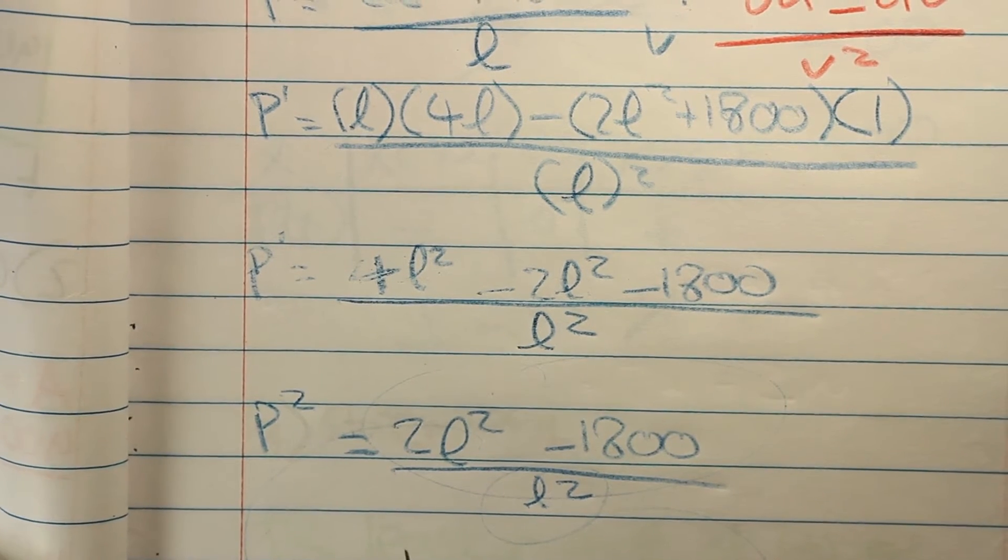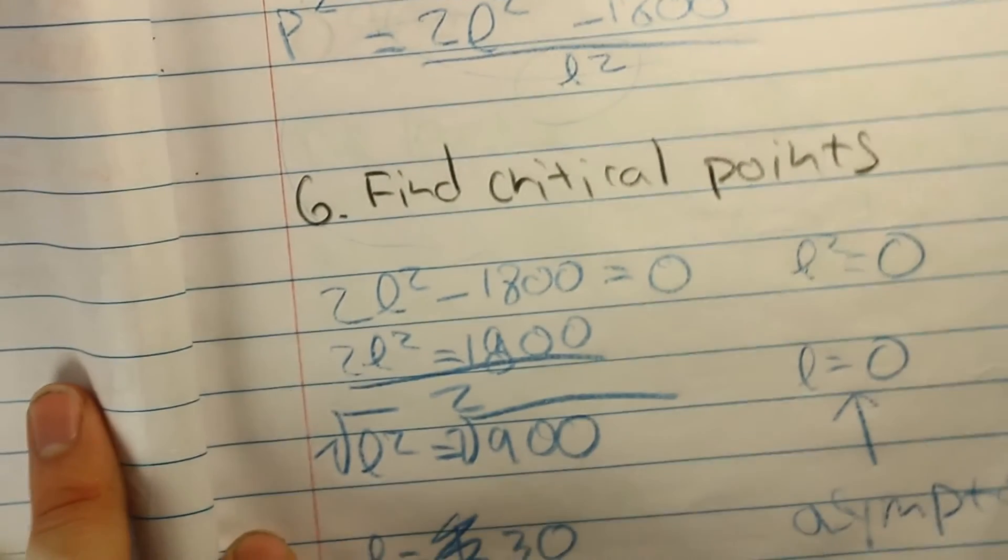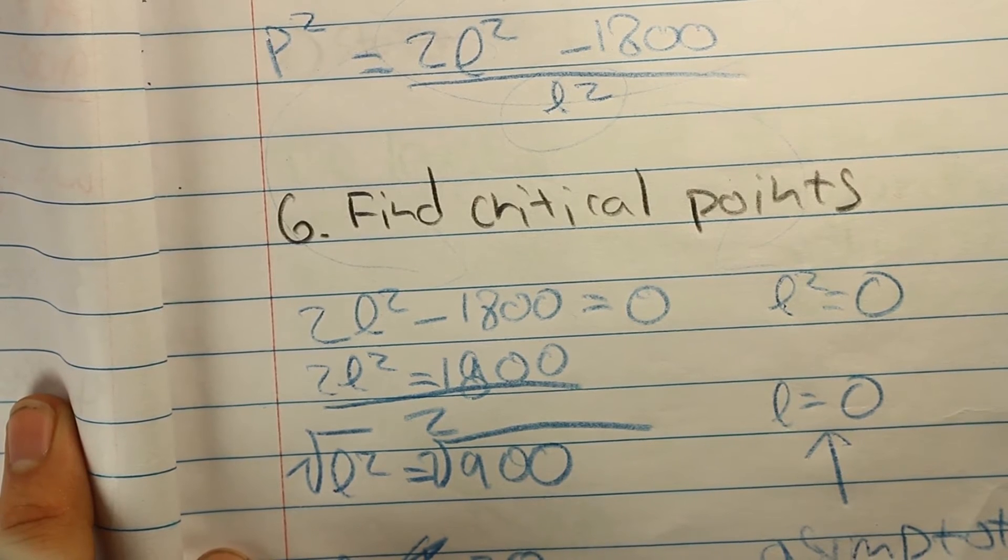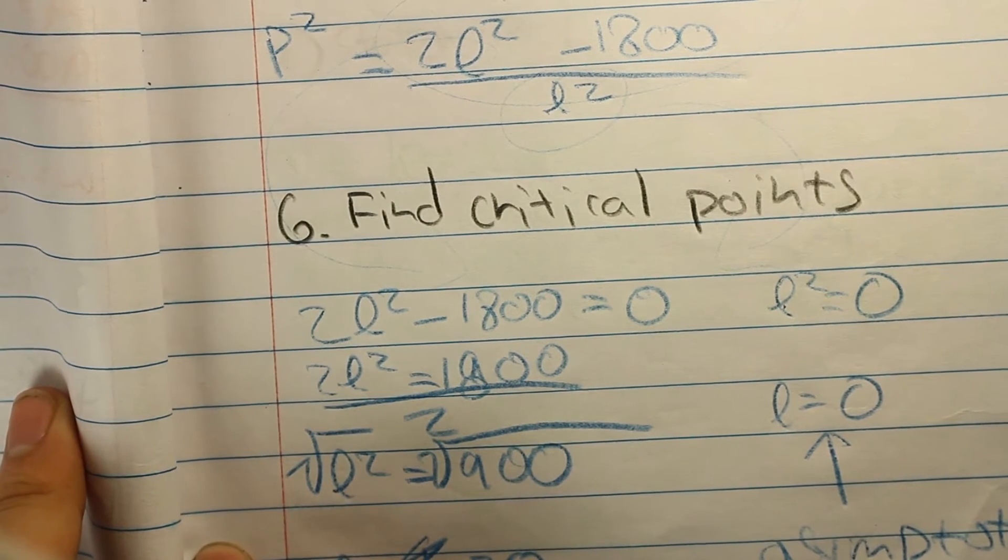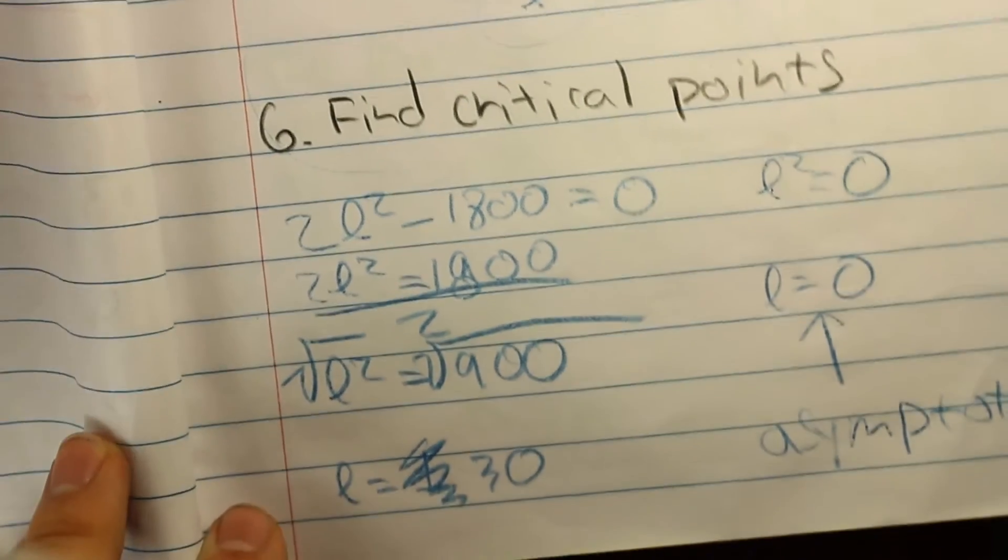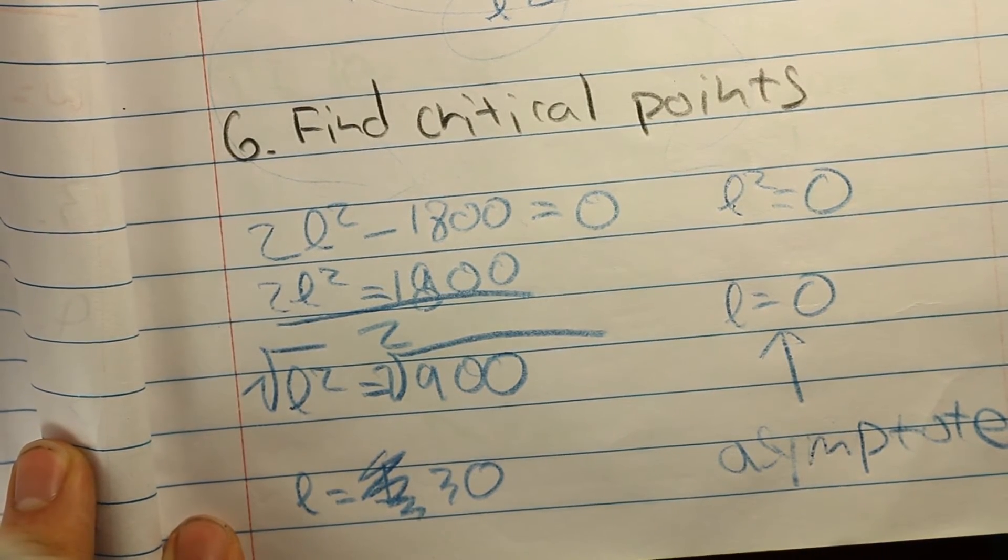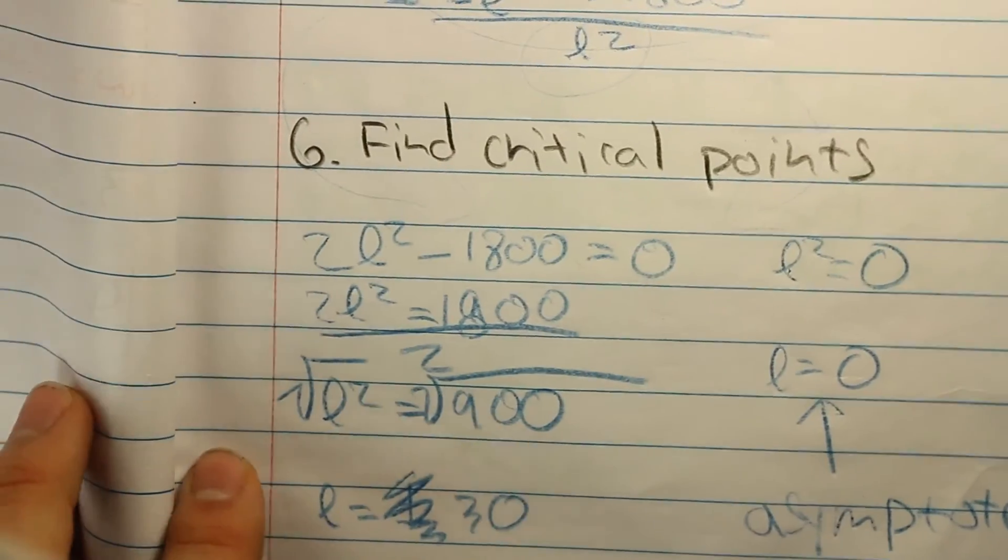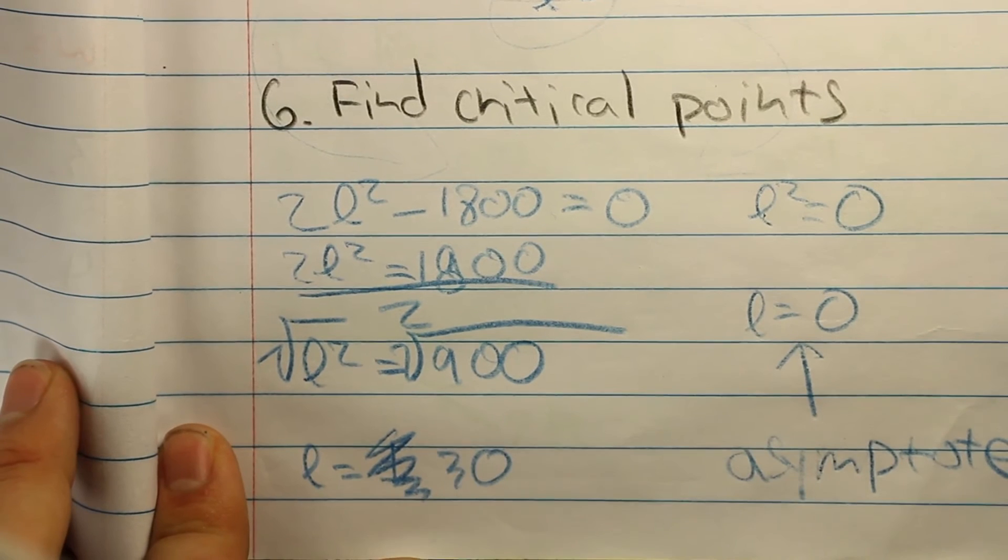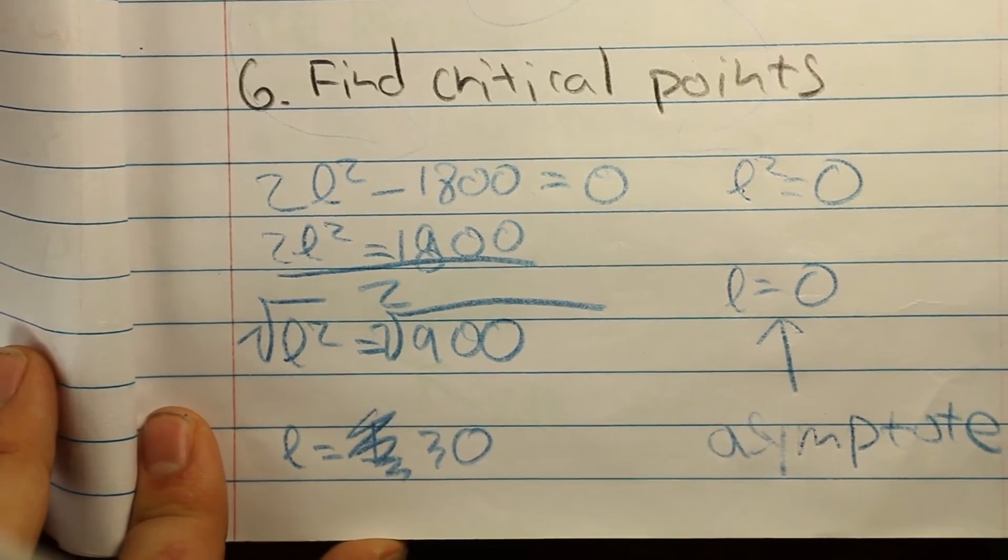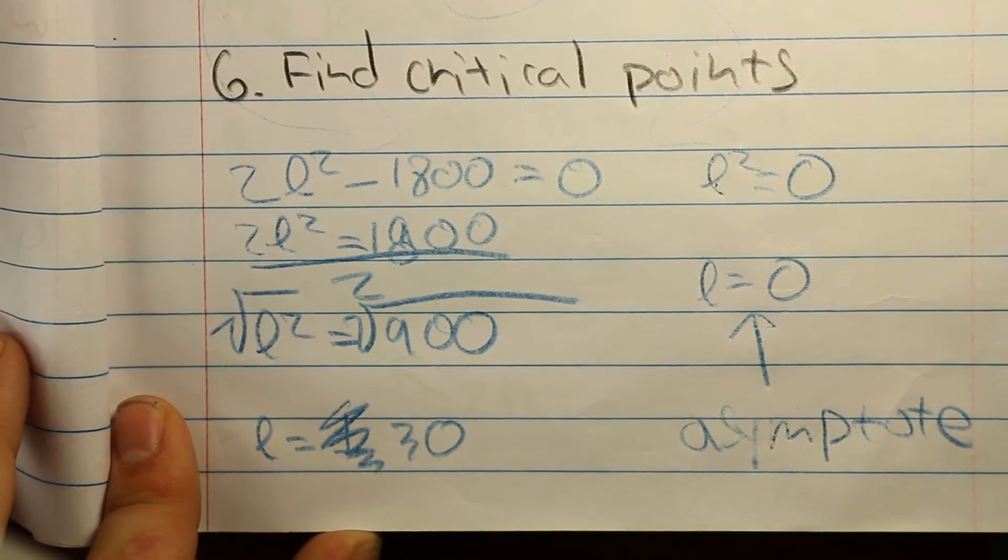And because we are looking for the minimum value, we need to find the critical points. In order to find the critical points, you just need to set the numerator and the denominator equal to 0. When you set the numerator equal to 0, you will get plus or minus 30 as the length. However, this being a real-life situation, you cannot have a negative length. Therefore, you can disregard it and just go with the positive value. And when you set the denominator equal to 0, that creates an undefined problem. And in real life, there is no such thing as undefined length or undefined anything for that matter.